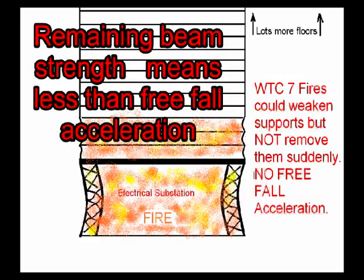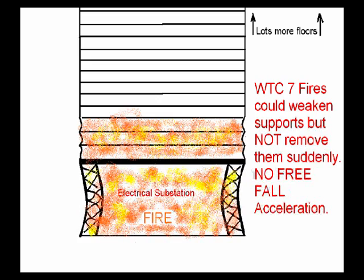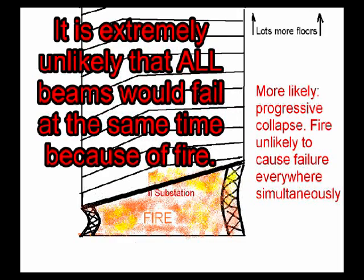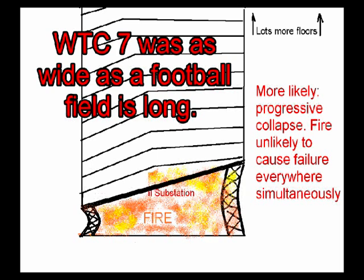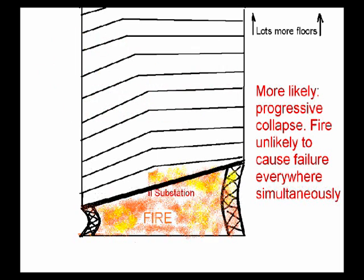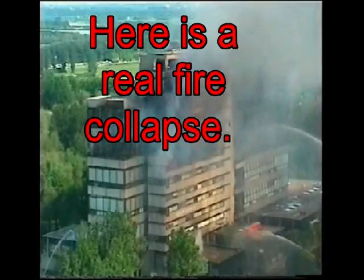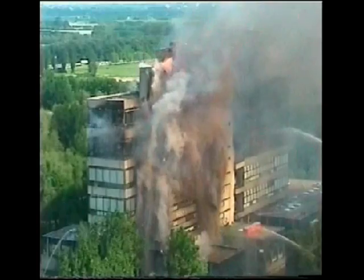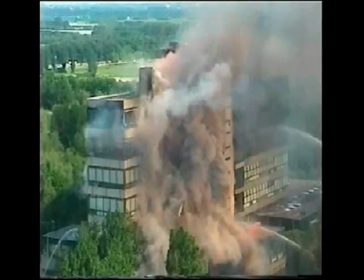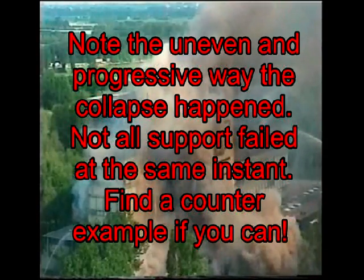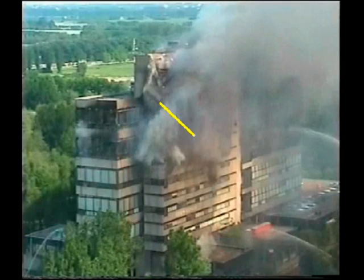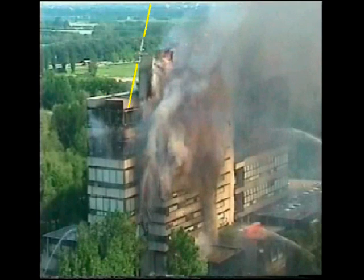Beams in a fire would lose some of their strength well before they lost all of their strength. Therefore, the building would drop, but not at free-fall acceleration. In addition, a fire would be very likely to weaken some beams before others, leading to a partial or progressive collapse. Take a look at a real fire collapse — notice how the collapse is partial, uneven, and nowhere near free-fall acceleration. This video of a building in Holland is the closest example anyone can find of a building dropping anything like Building 7 because of a fire. Of course, there are many examples of buildings dropping like Building 7 because of a controlled demolition.